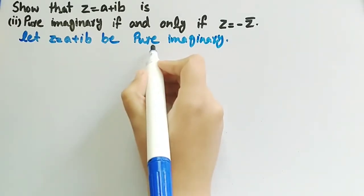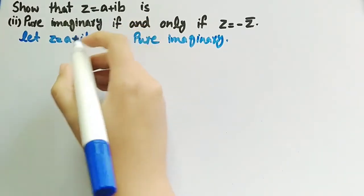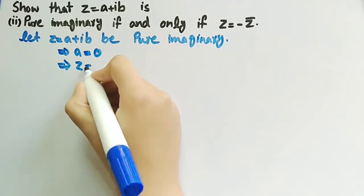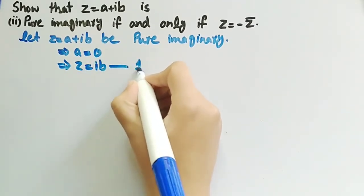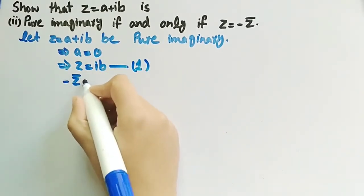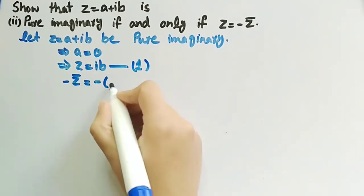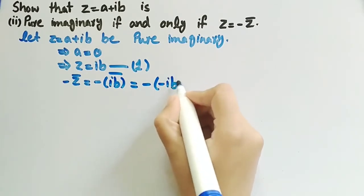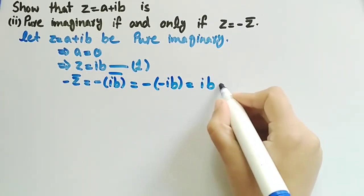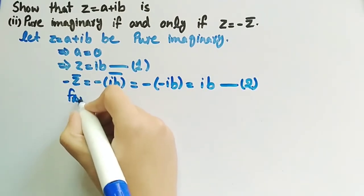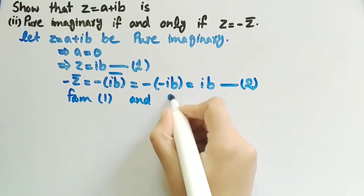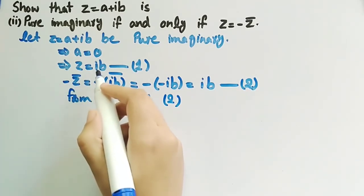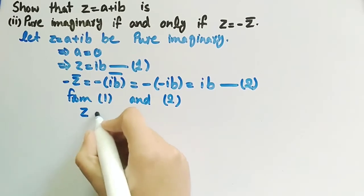If Z is pure imaginary, then its real part is 0. The real part is A, so A equals 0, which implies Z equals iB. Let this be equation number 1. We can write minus Z conjugate as minus times the conjugate of iB, which equals minus of negative iB, which equals iB. Let this be equation number 2. From equations 1 and 2, Z equals minus Z conjugate since both equal iB.